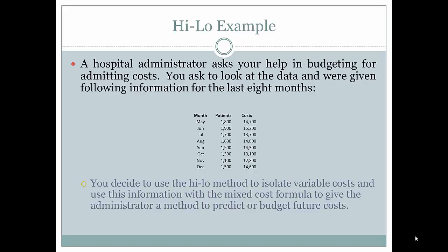A high-low example: a hospital administrator asks your help in budgeting for admitting costs. You are given the following information for the last eight months — May through December — including the number of patients admitted each month and the costs associated with admitting those patients. You decide to use the high-low method to isolate variable costs and use this information with the mixed cost formula to give the administrator a method to predict or budget future costs.